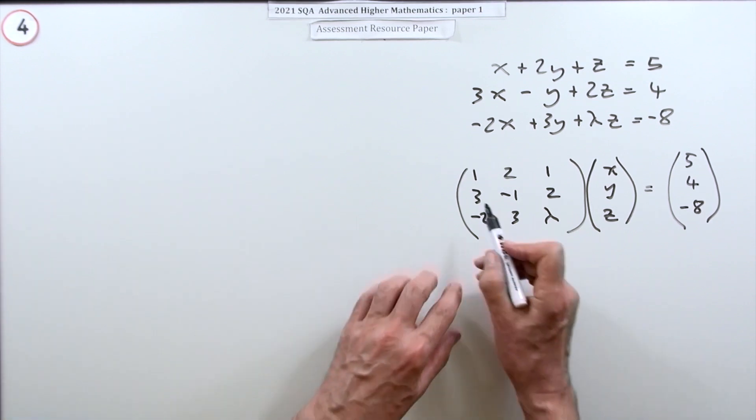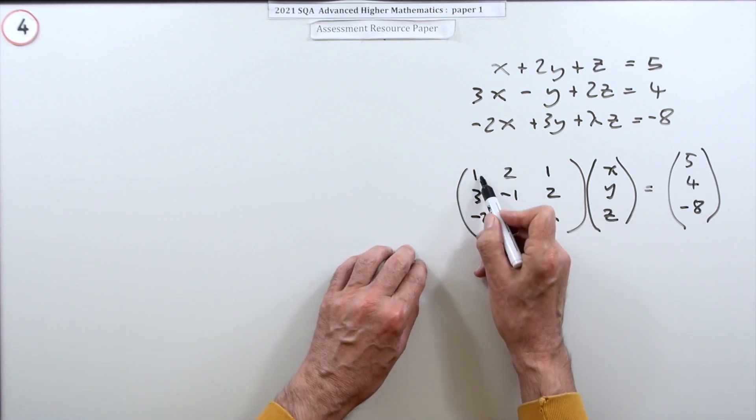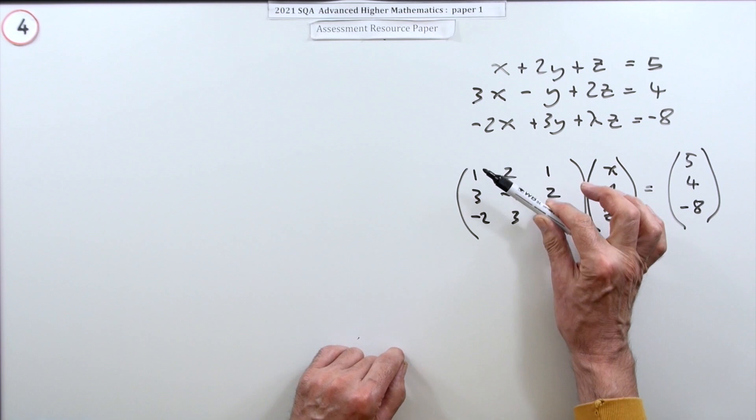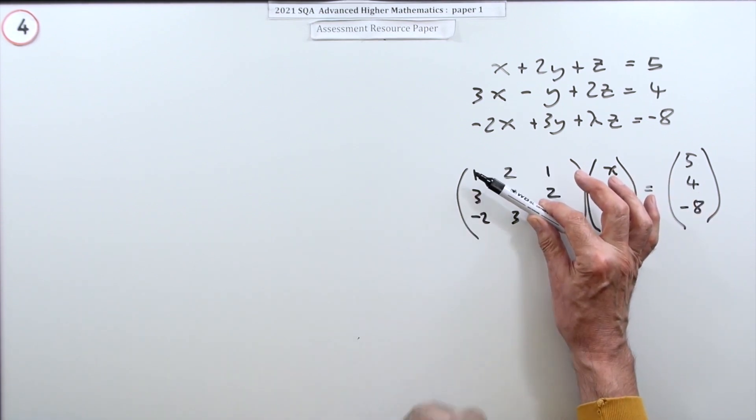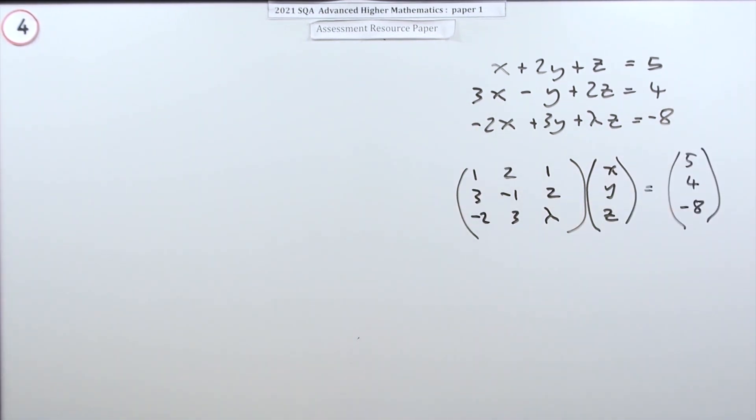Now Gaussian elimination just sort of goes halfway through that. It doesn't go all the way down to the identity matrix, which is just a row of ones in the middle with zeros everywhere. It just only goes as far as getting into upper triangular form. So you've just got zeros in this place. But in the end, it's just the same as just using that simple technique for solving the system of equations.